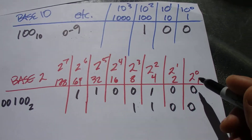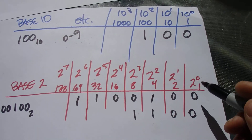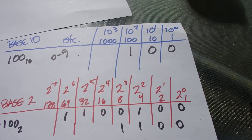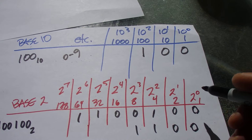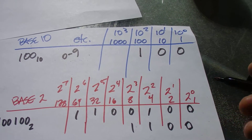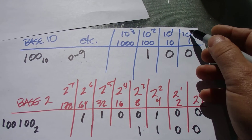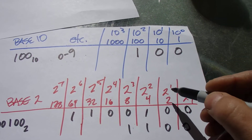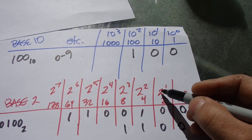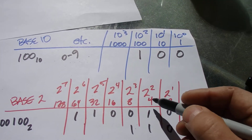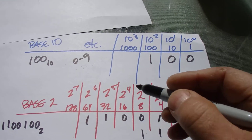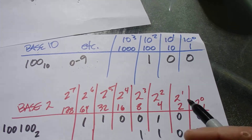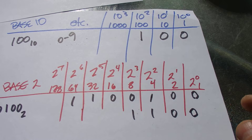So the reason base 2 kind of throws people off, and maybe there's a little trepidation with binary — like, I don't understand that computer stuff — well, it's just jumping in powers of 2. So instead of 10 to the 0 being 1, it's 2 to the 0 being 1, then 2 to the first power being 2, and 2 to the second power being 4, 8, 16, 32, 128, on ad infinitum.